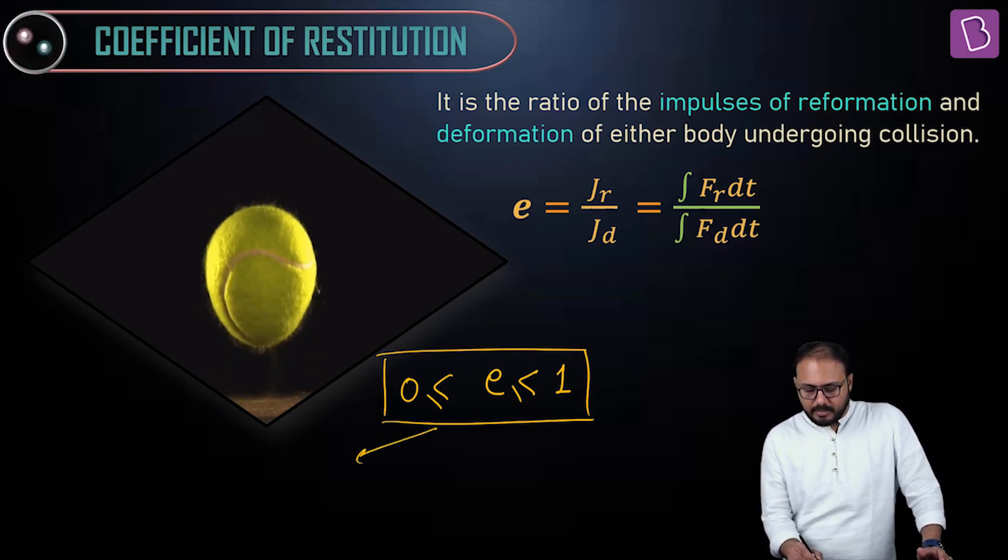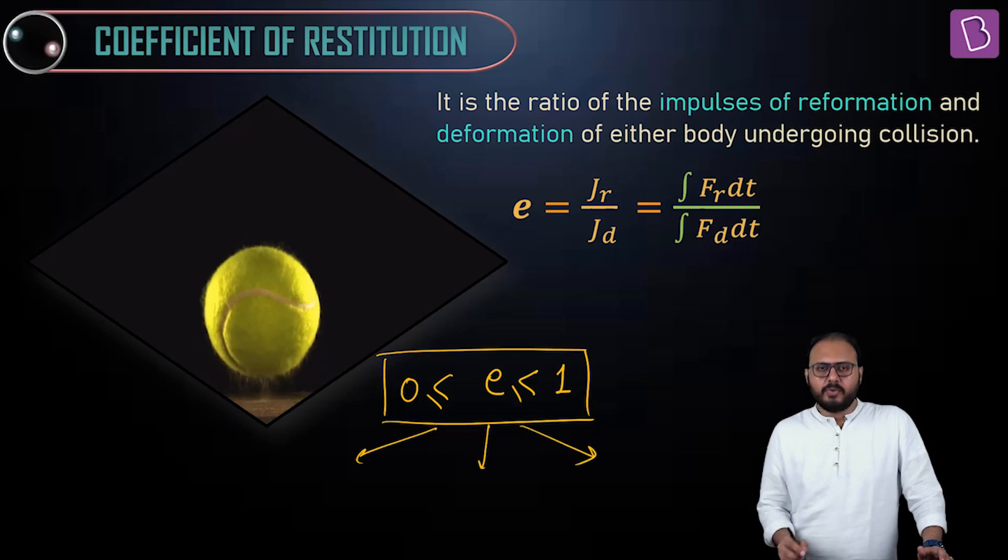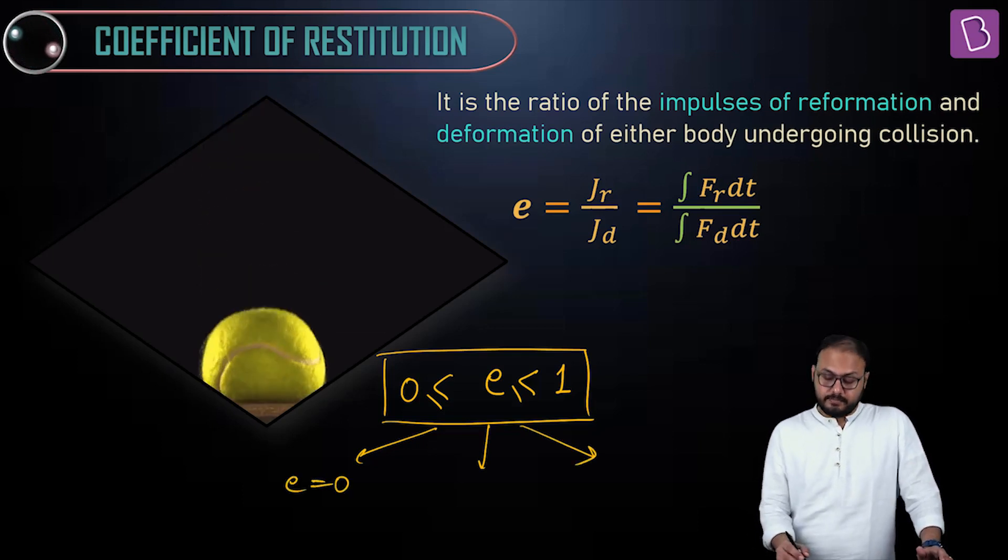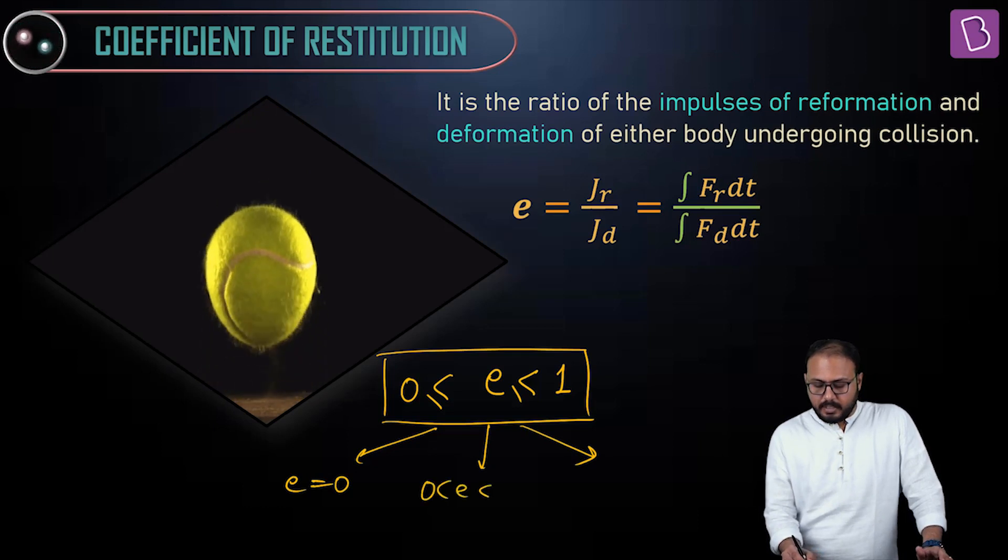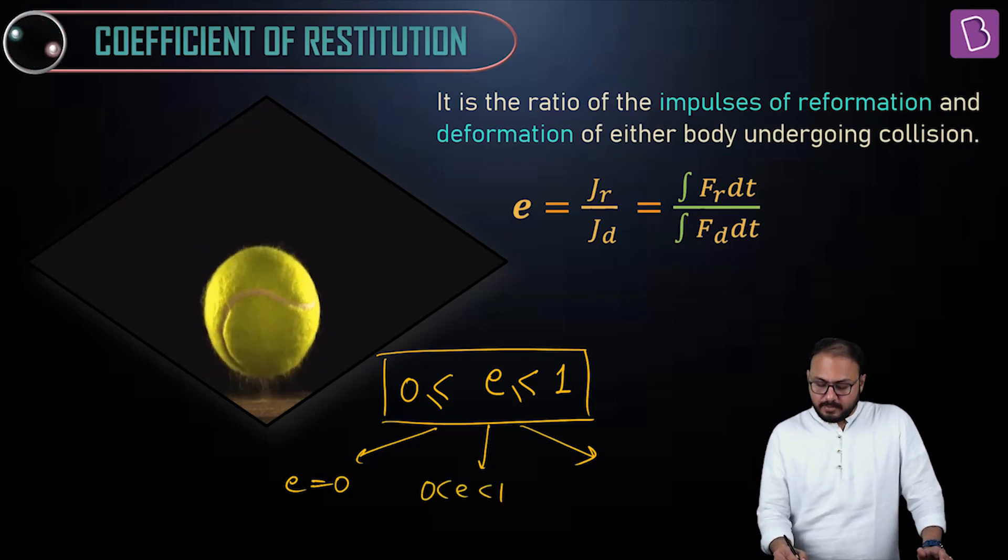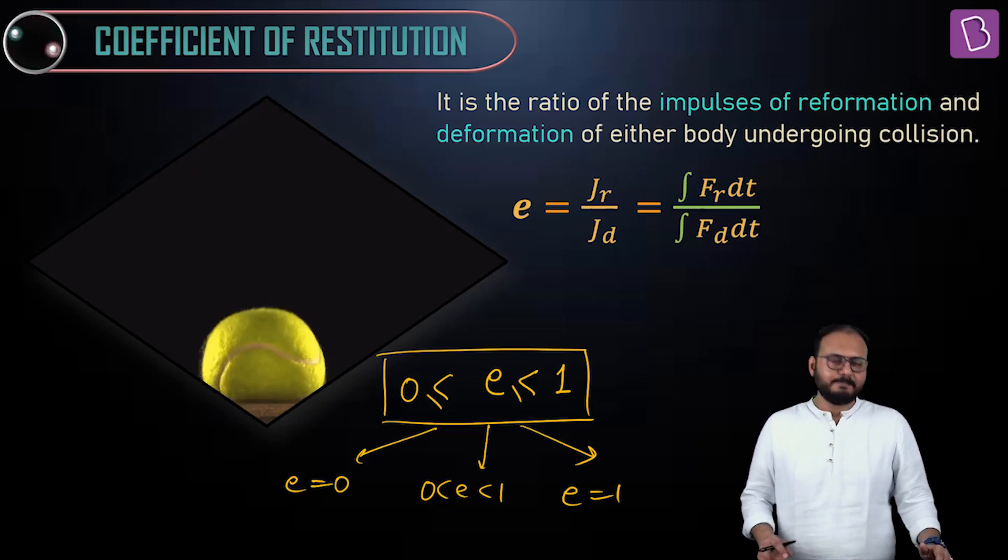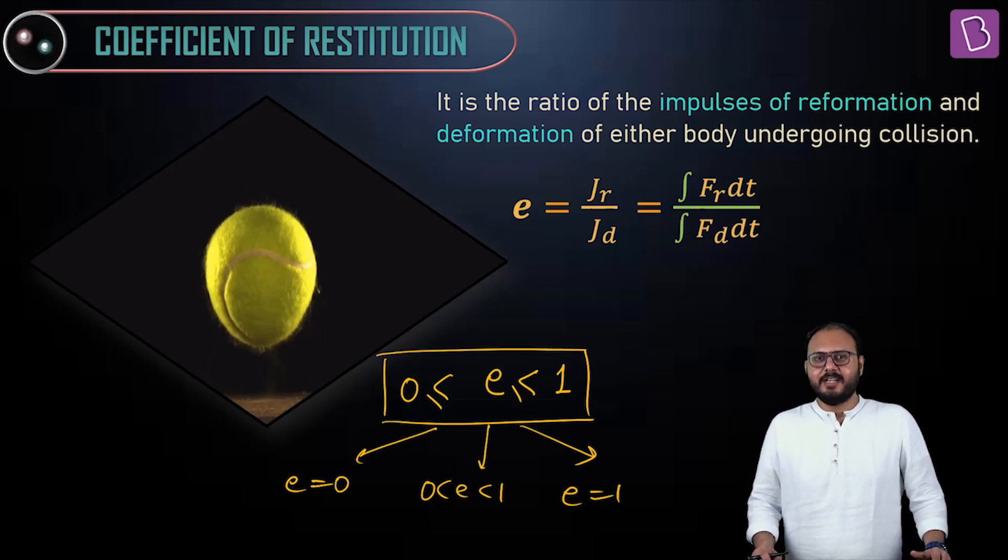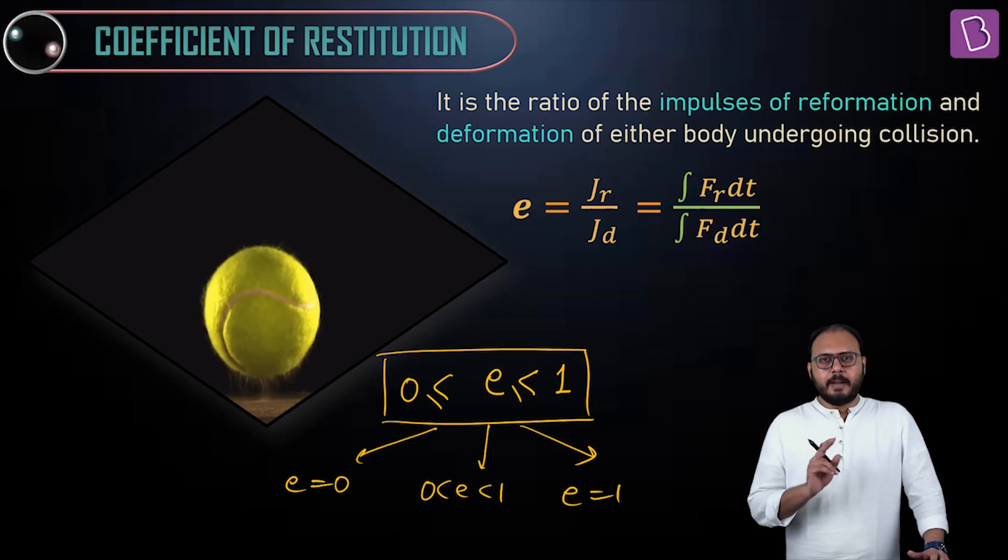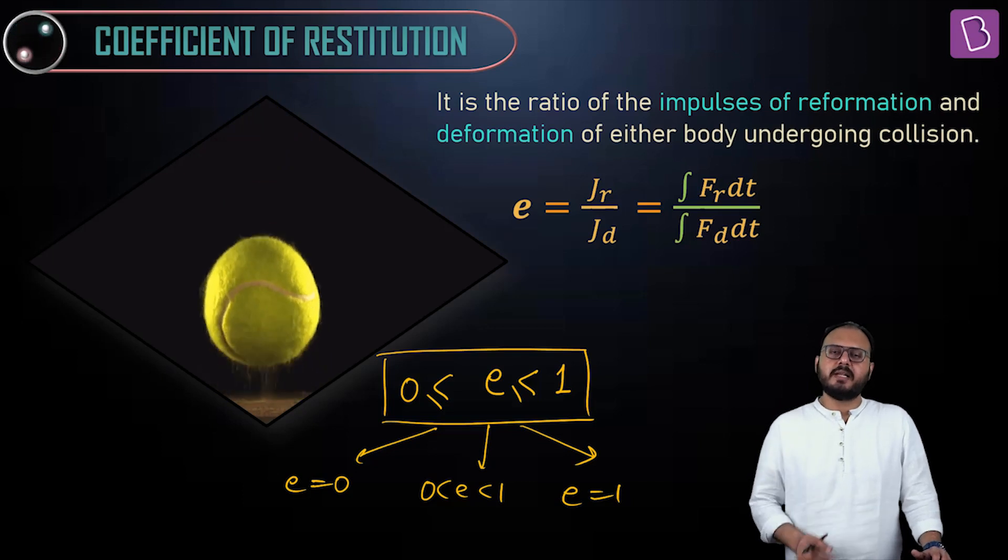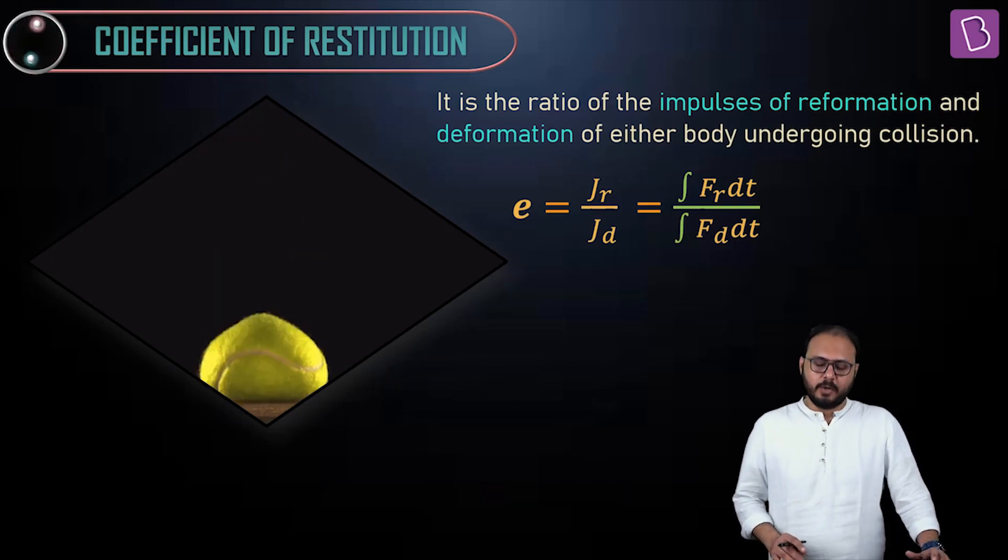How about I consider and make it into 3 cases? E could be 0, E could be between 0 and 1, or E could be 1. Can you see 3 cases building up? You guessed it right. What is the first case? Complete reformation. What is the last case? Complete destruction. What is the middle case? Somewhere in between. Let's go.